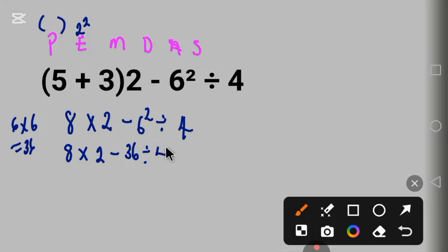Next is multiplication. The multiplication is the first one here: 8 times 2 is 16, minus 36 divided by 4.